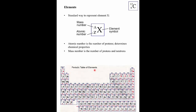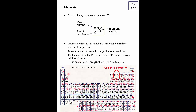The periodic table lists all elements. Element 1 is hydrogen with one proton, element 2 is helium with two protons, element 3 is lithium with three protons — going up by one proton at a time. Carbon is element number 6, meaning it has 6 protons in its nucleus. The atomic number at the bottom tells you the element, while the mass number at the top can actually differ for the same element.